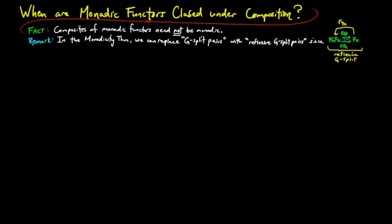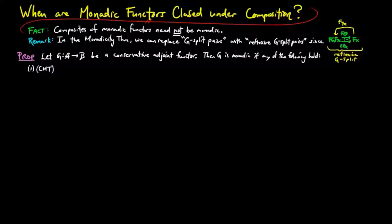In the following proposition, we give three weaker conditions for monadicity. Let g be a conservative adjoint functor, then g is monadic if any of the following hold for g. One, we say that g satisfies the conditions for the crude monadicity theorem, provided a has reflexive co-equalizers and g preserves them.